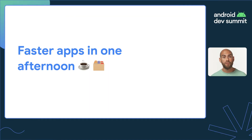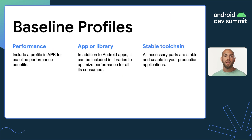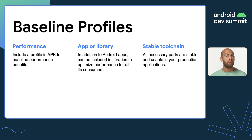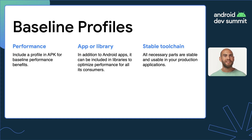Second is stable support for generating baseline profiles. If you haven't tried them yet, baseline profiles are a powerful way to improve app startup and runtime performance without changing a single line of app code, and we've seen them yield up to 40% faster startup times. With Jetpack Benchmark 1.1 and AGP 7.3 both reaching stable, the toolchain for generating a profile is now completely stable and ready to integrate into your apps. See the full talk for all the details.